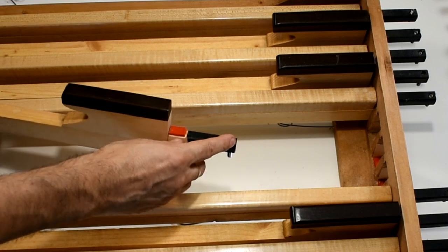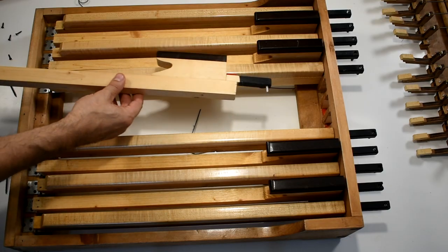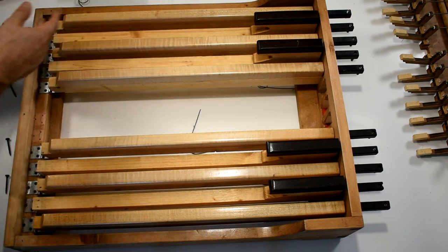The allen screw is used to adjust the depth with which the pedal presses the roller board square.